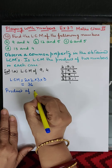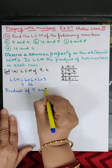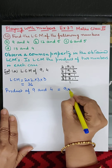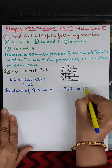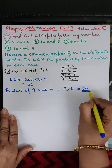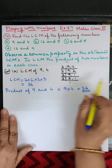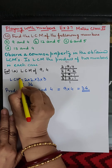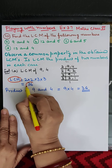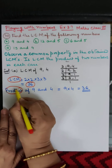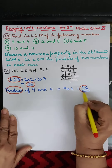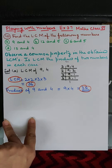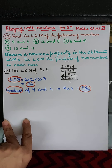Two twos are four, four threes are twelve, twelve threes are thirty-six. So the LCM is 36. Now let us take the product of 9 and 4: nine into four equals thirty-six. So LCM is 36 and product is 36. Part A is done.